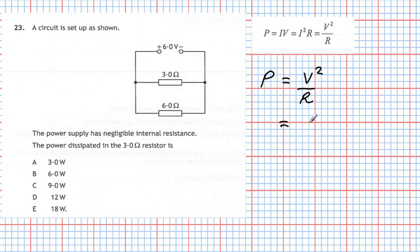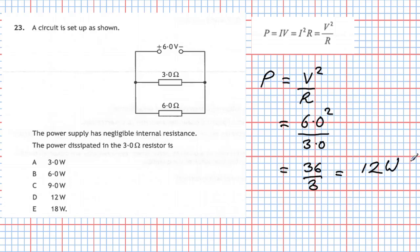So V squared is 6.0 squared divided by the resistance of 3. That gives 36 divided by 3, which equals 12. Power is measured in watts, so the answer is 12 watts, and my answer is D.